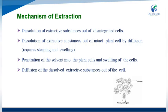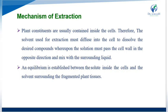In this method, two required steps are needed: first is steeping and second is swelling procedure. The solvent penetrates into the plant cell wall causing swelling of the cells, then diffusion of the dissolved extractive substance out of the cell occurs. Plant constituents are usually contained inside the cell; therefore the solvent used for extraction must diffuse into the cell by dissolving the desired compounds, whereupon the solution must pass out of the cell.